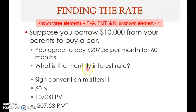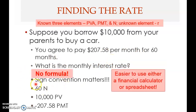Knowing three elements, you can solve for the fourth, because these four must be in equilibrium. If three are fixed, the fourth is determined — it cannot be any arbitrary value. Unfortunately, there is no formula for solving for the interest rate. For the other elements — present value, payment, and number of periods — we have formulas, but not for the interest rate.